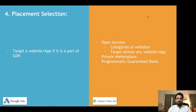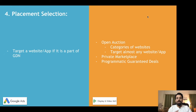The fourth difference is placement selection — the control an advertiser has over which websites and apps their ads are shown on. In Google Ads, advertisers can select a list of specific websites or apps, but those websites must be part of the GDN. In DV360, you can select any website or app in the world, and there is a strong chance your campaigns will show there.